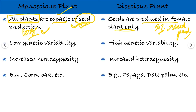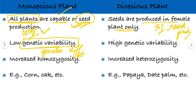Next point: in case of monoecious plants, there is low genetic variability. Genetic variability means genetic differences — changes or alterations in genes, forming plants which differ in their genotype. There is a very low level of genetic variability in monoecious plants. But in case of dioecious plants, the genetic variability is very high.